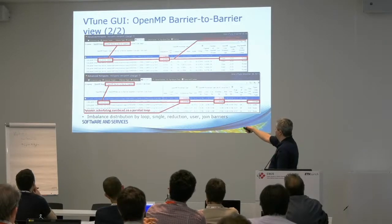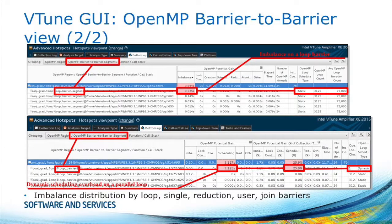This is how it looks: you can choose OpenMP barrier-to-barrier segment as the view, and it tells you loop barrier segment one, segment, segment, segment — calling out all those subregions so you can individually analyze them and see if a region has a load imbalance coming from one of its subregions.